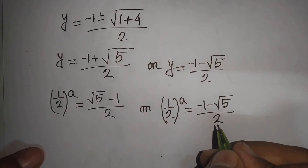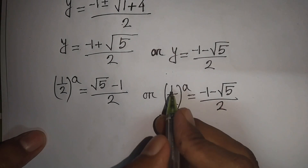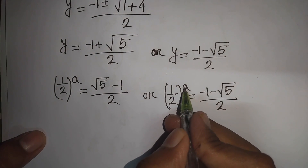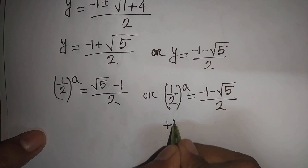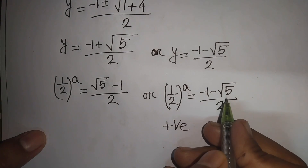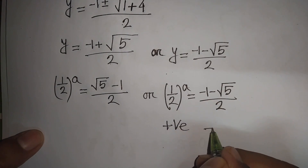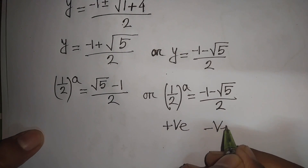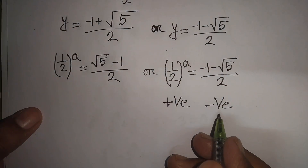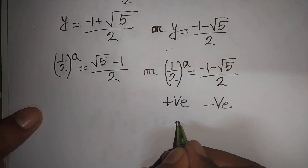Now remember that (1/2) to the power of any number is always positive. But negative 1 minus square root of 5, divided by 2, is always negative. So positive cannot equal negative — this solution is rejected.